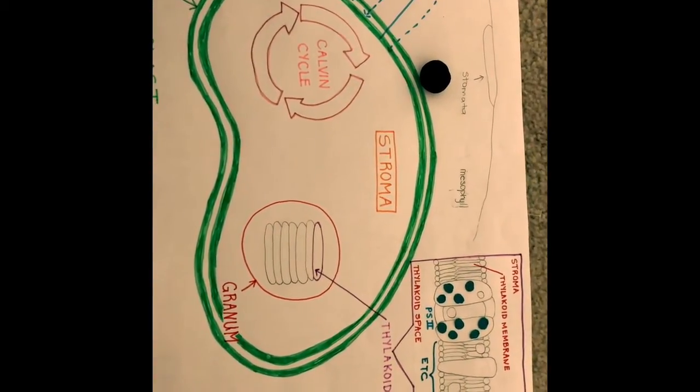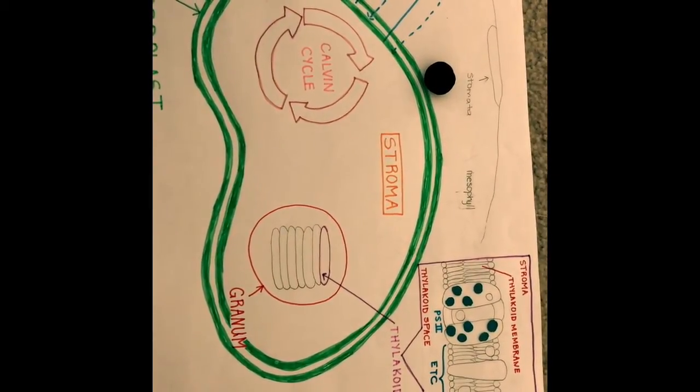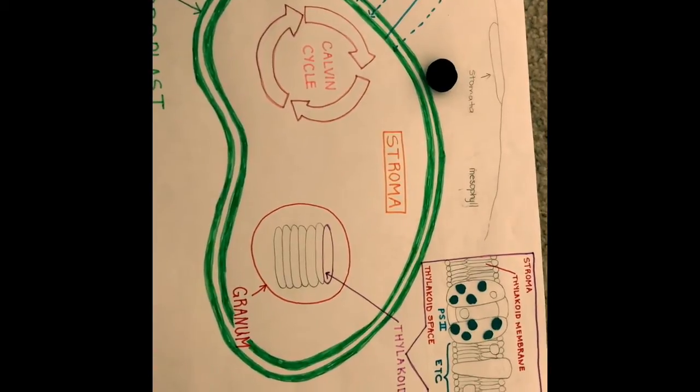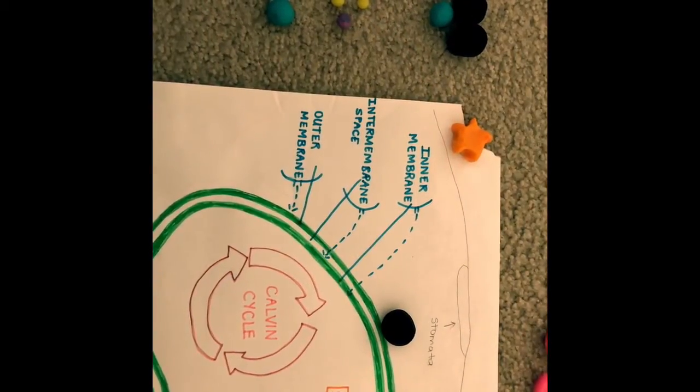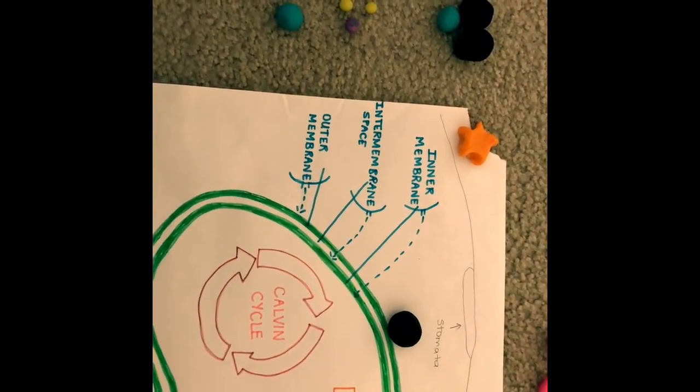The thylakoids separate the stroma from the thylakoid space inside the sacs. The synthesis of organic molecules in the chloroplast is driven by light energy absorbed by chlorophyll. There are two stages of photosynthesis: the light reactions and the Calvin cycle.